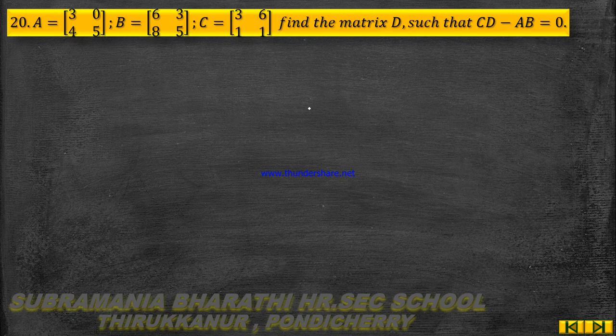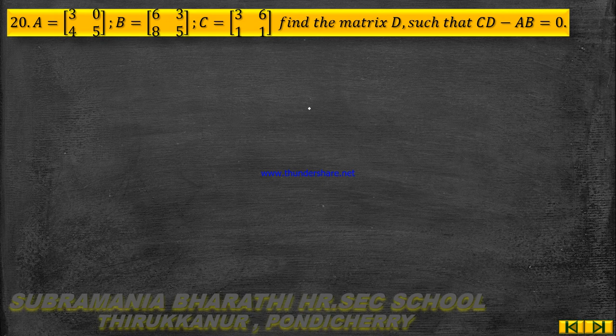Find Matrix D such that C into D minus C into B equal to 0. So, 3 matrices A, B, C are given, and Matrix D is to be found. The condition is C D minus A B equal to 0.